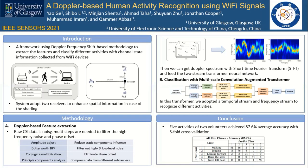Based on our assumption, we adopt a modified transformer structure called a multi-scale convolution augmented transformer, which has been proposed for radar-based human activity recognition work. In our task, we use it to sense the Doppler spectrums from two sides — both the temporal side and the frequency side.